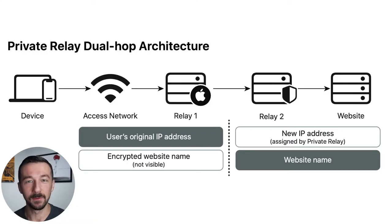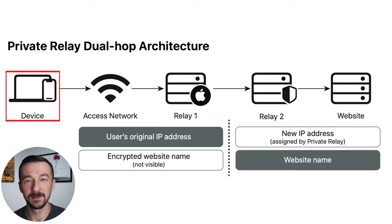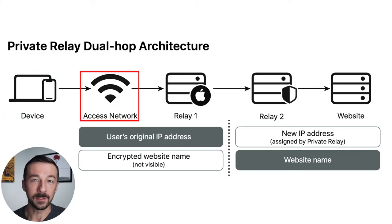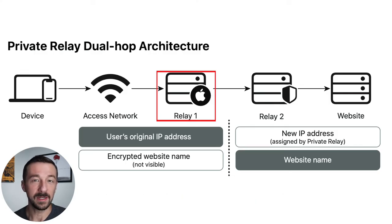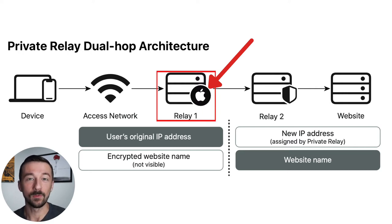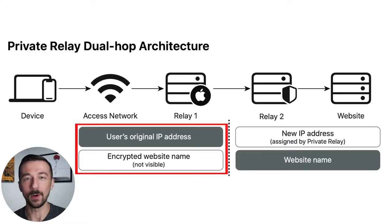This image is from the technical overview that Apple published. We have the device — in this example my Mac Mini — and the access network, which is the network you're connected to, in this case my home network. This is where Private Relay starts. We have Relay 1, also referred to as the Ingress Proxy. The software for Relay 1 is operated by Apple in locations across the world. According to the documentation, the only thing Relay 1 can see is the original source IP address the request came from. The actual website requested is encrypted and not visible to Relay 1.